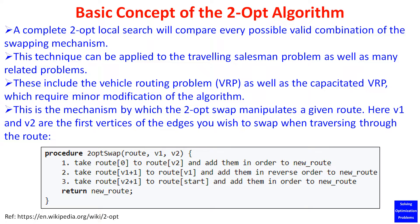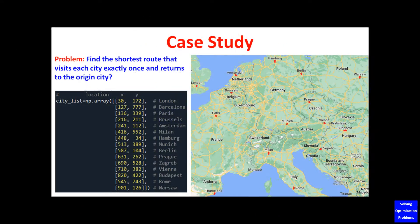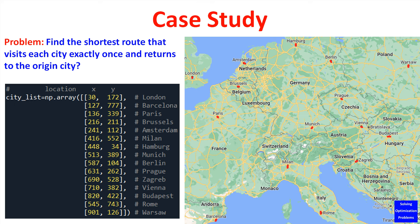This technique can be applied to the Traveling Salesman Problem as well as many related problems. These include the Vehicle Routing Problem, or VRP, as well as the capacitated VRP, which require minor modification of the algorithm. This is the mechanism by which the two-opt swap manipulates a given route. Here, v1 and v2 are the first vertices of the edges you wish to swap when traversing through the route.